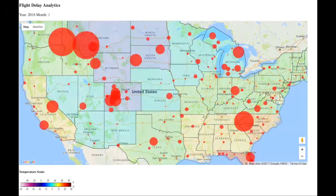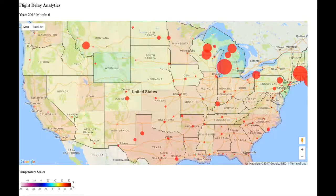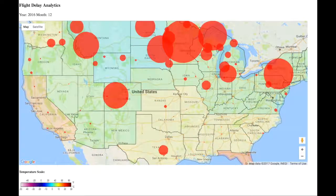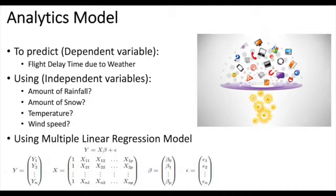From this visualization, it is quite easy to observe the magnitude of flight delays based on weather patterns. The next step for us is to develop the analytics model to predict the flight delay time due to weather. We have a number of independent variables to consider, such as the amount of rainfall, the amount of snow, temperature, and wind speed at the airport at a particular time. We plan to use the linear regression model in our analysis to help predict future flight delays based on weather forecast.